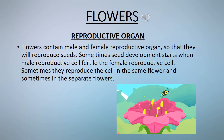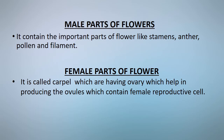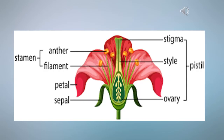Flowers contain male and female reproductive organs — they let plants reproduce by making seeds. In flowering plants, reproduction occurs in the flowers. There are several important parts in the flowers that help in fertilization.